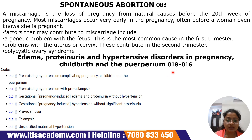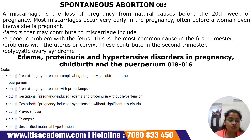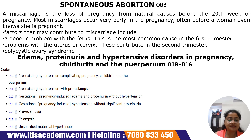The next important set of conditions has codes running from O10 to O16, referring to edema, proteinuria and hypertensive disorders in pregnancy, childbirth and the puerperium. O10 refers to pre-existing hypertension complicating pregnancy, childbirth and the puerperium. O11 refers to pre-existing hypertension with pre-eclampsia. O12 refers to gestational edema and proteinuria without hypertension. O13 refers to gestational hypertension without significant proteinuria. O14 refers to pre-eclampsia. O15 refers to eclampsia. O16 refers to unspecified maternal hypertension.